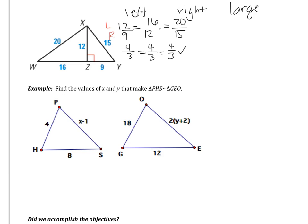Now I'll write the similarity statement. My left triangle I'll call WXZ. Going W, X, Z, I went large side, small side, medium side. So on the triangle on the right, I need to go large, small, medium — that's XYZ. So the similarity statement is triangle WXZ ~ triangle XYZ.